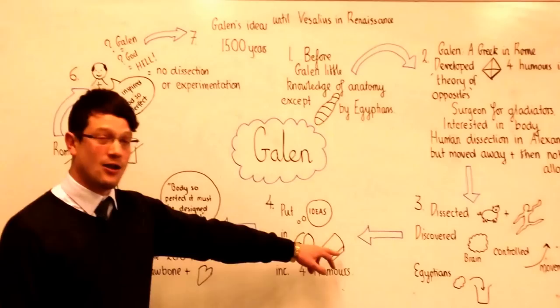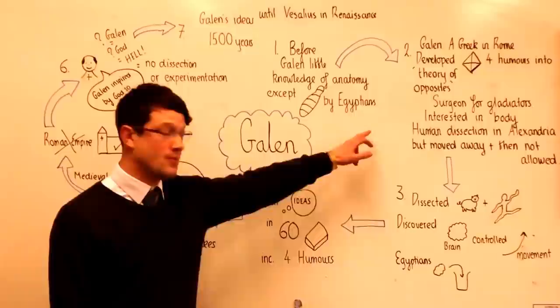Galen put his ideas into 60 books, and these books included Hippocrates' four humours.